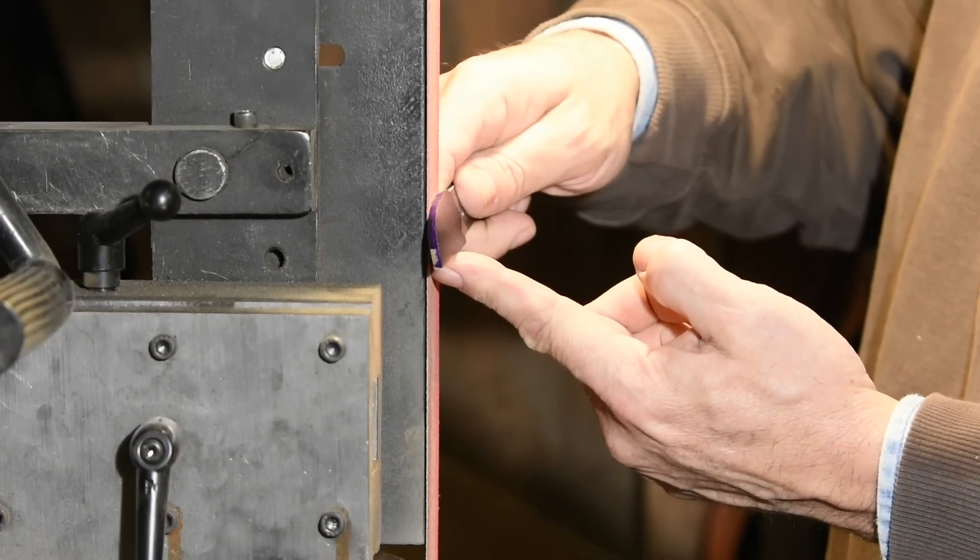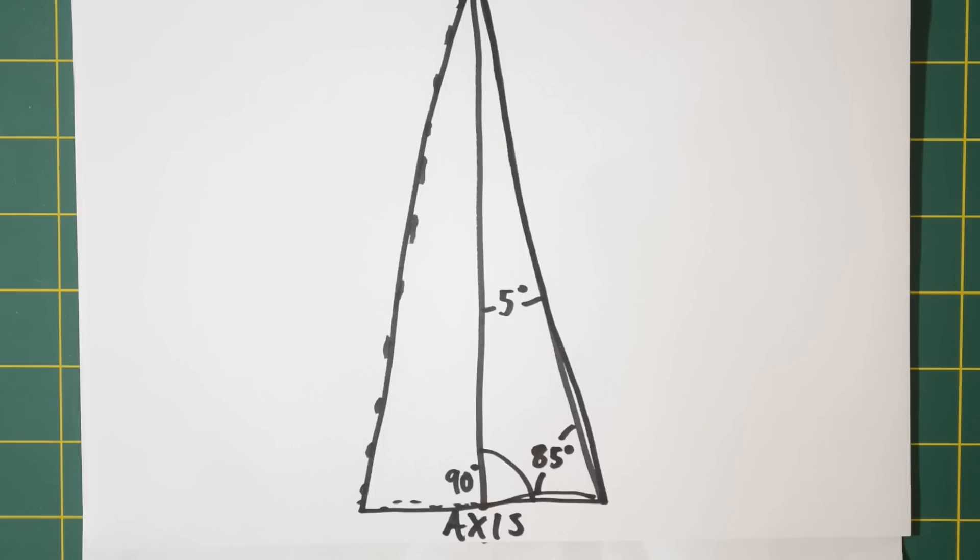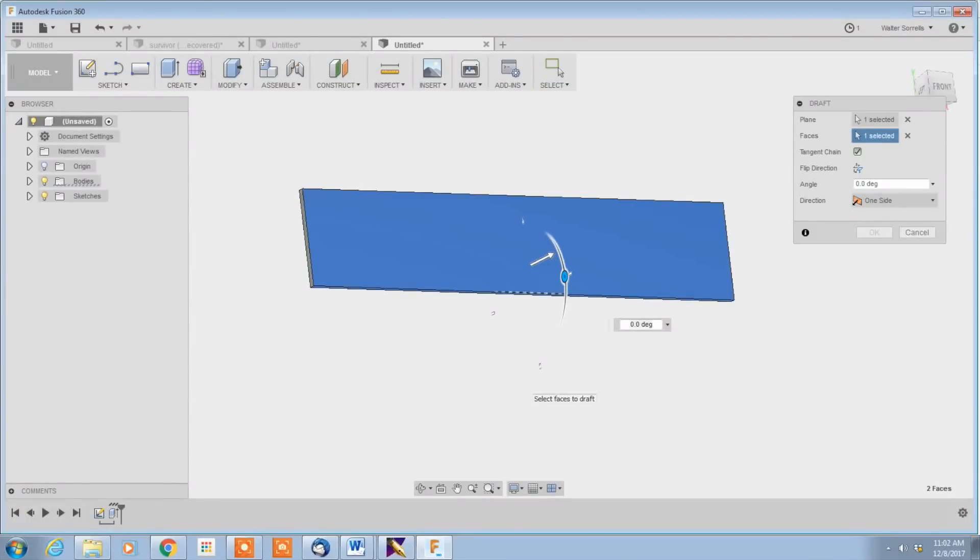Anyway, no matter how you measure it, a fairly small change in the angle makes a big change in how the bevel comes out. And that, in turn, has a major effect on cutting ability. Let's demonstrate using this CAD program.